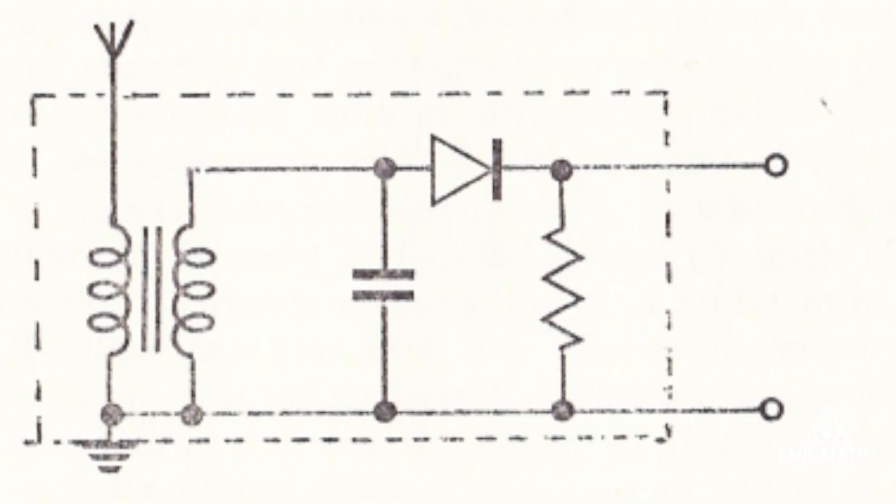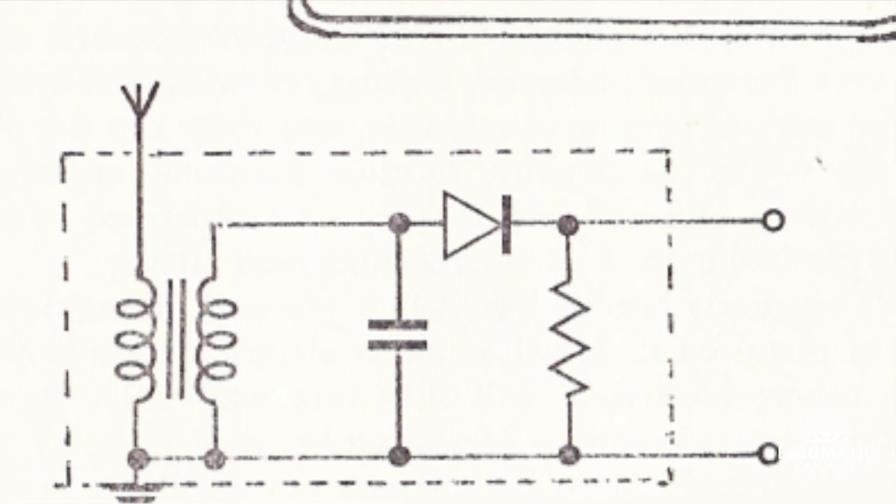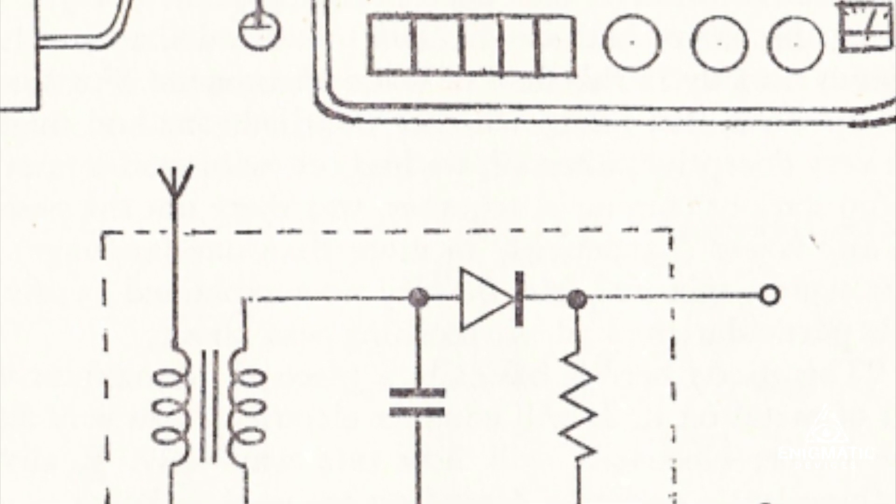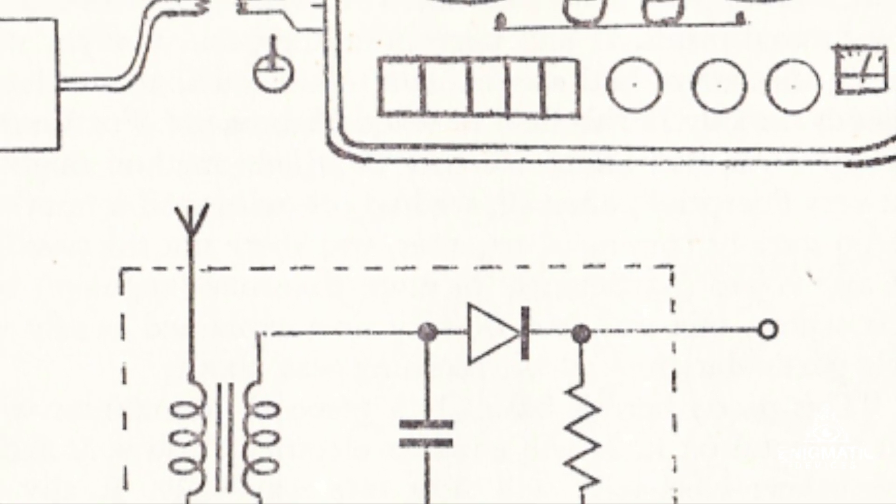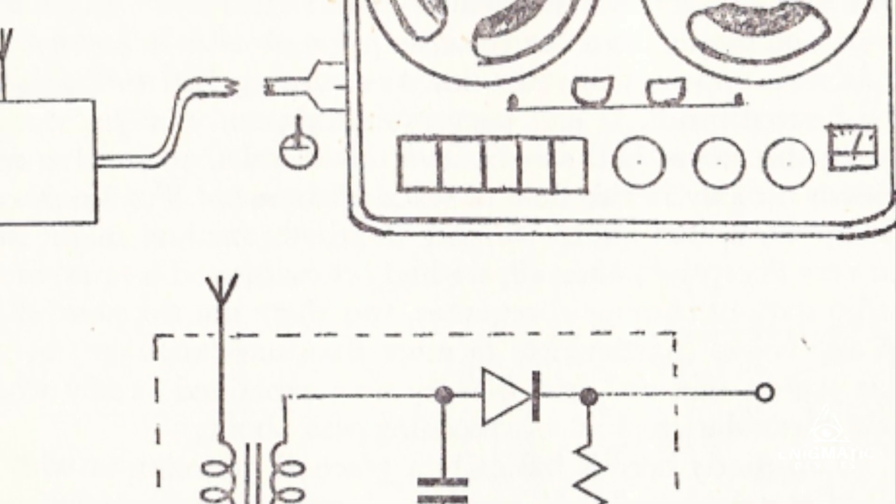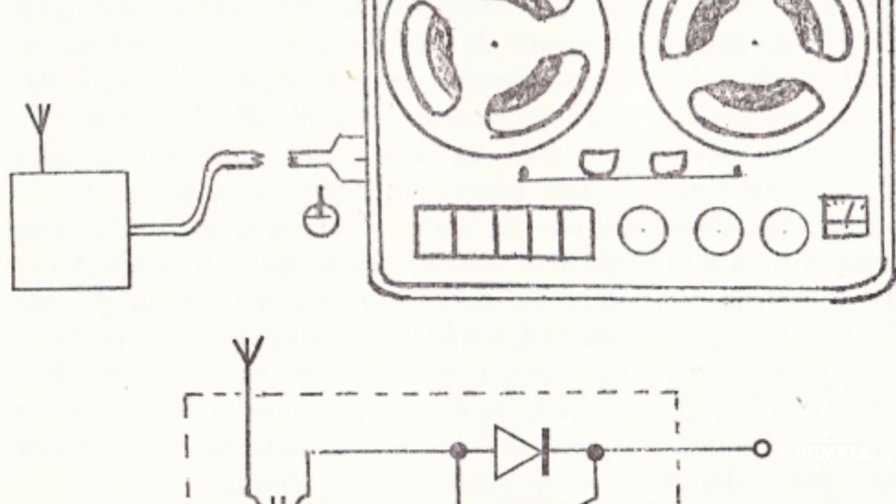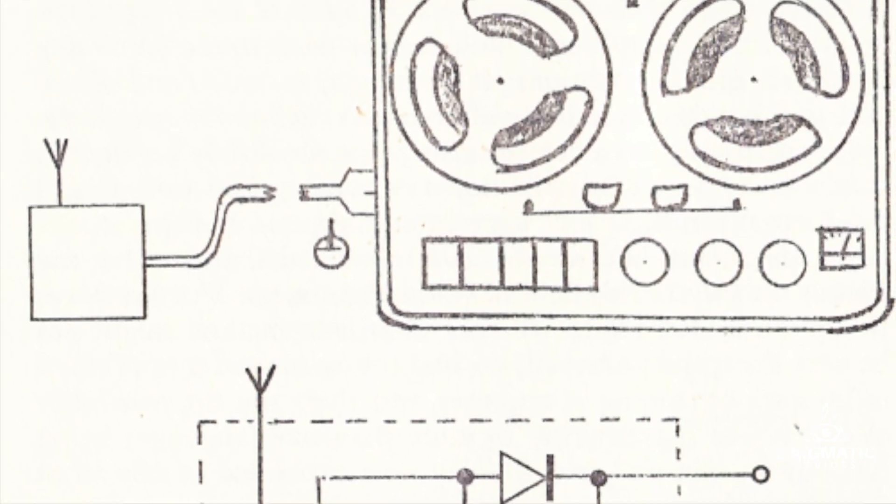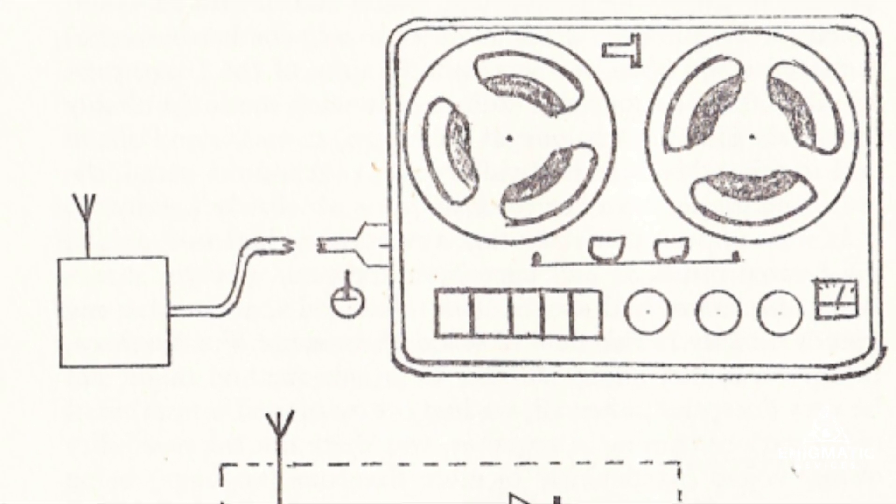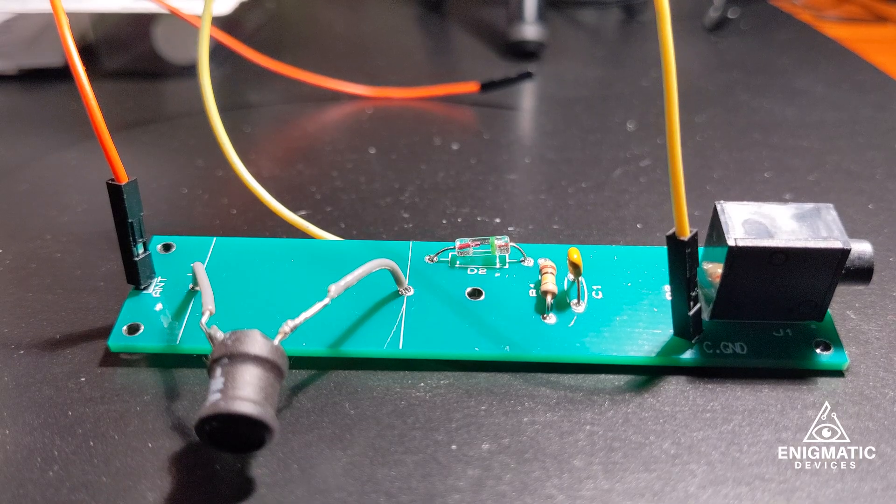But one device in particular that he talks about is something called the diode detector. The idea is the diode detector is a device that can be used in place of a mic. Basically, you build this device and you plug it into your recording equipment. And the advantage is that it doesn't capture any ambient noise. Essentially, the way it works is there's a component called a diode. It's a germanium diode.